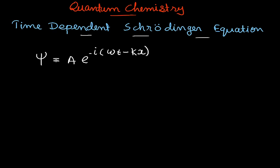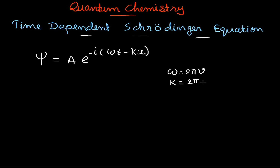This wave function gives us all the information about a particular wave. Here, A is the amplitude of the wave, and for a particular wave the amplitude is constant. Iota is an imaginary number. Omega is the angular velocity and can be written as 2π·ν, where ν is the frequency. k is the propagation constant, also known as the angular wave number, and its value is given by 2π/λ.